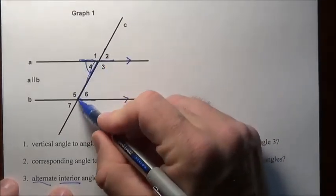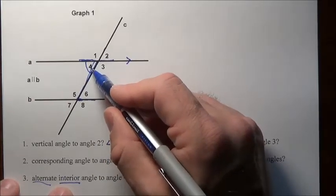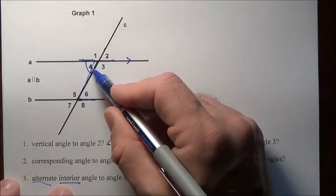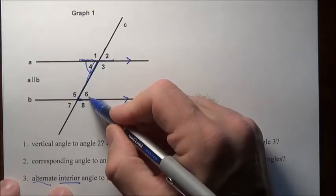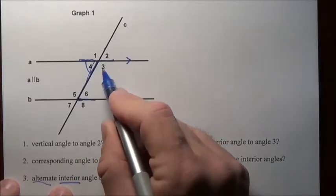Again, we'll call them Z-meisters in class, but that's just our made up name. The real technical name for it is alternate interior angles. Four and six are alternate interiors. Same as three and five will be alternate interiors also.